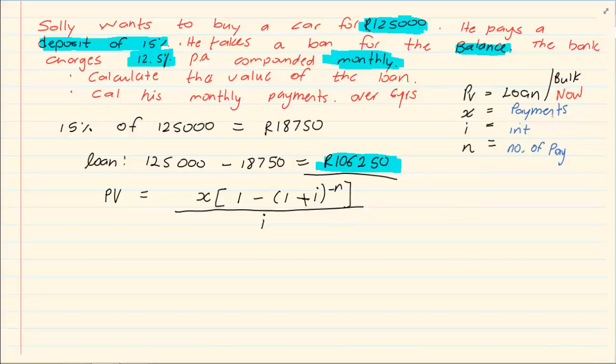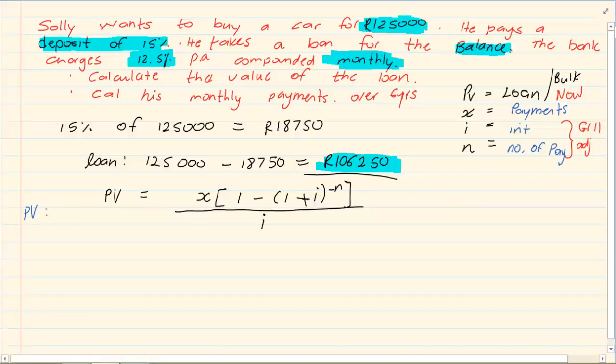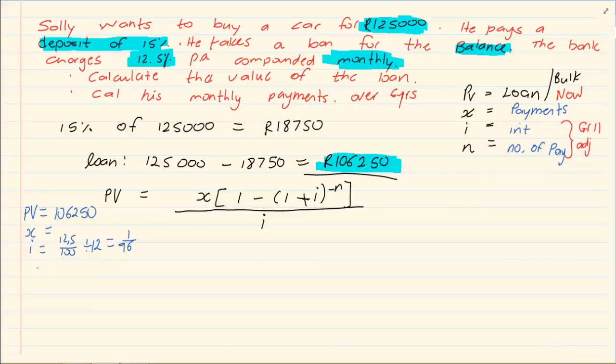Now the I and the N, you are going to adjust it exactly as you had done your adjustment in grade 11. Now let's take the following question. If I have got my present value which is 106,250 then I don't know what my X is. My I is 12.5 over 100 divided by 12. Now why am I dividing by 12? Because it is monthly. Which will give me 1 over 96. I prefer working with a fraction because if you work or you round off early, your final answer would be incorrect. Your N is equal to, if it is over 6 years, we are going to times it by 12 which will give us 72.